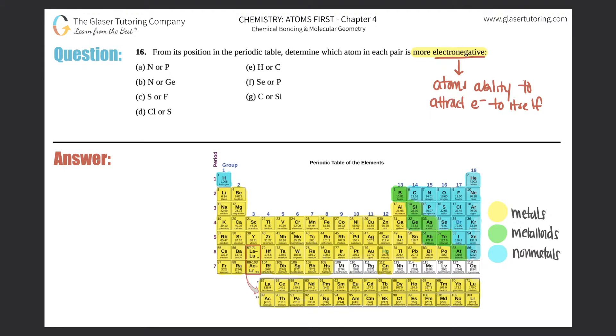And the rule is, is that if you have a higher electronegativity, that means that you're more able to attract electrons.